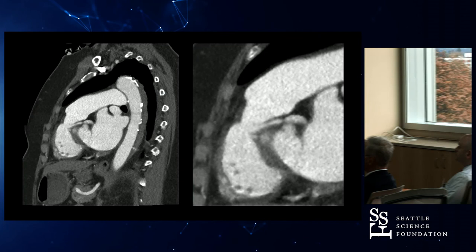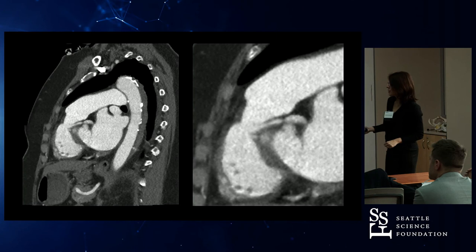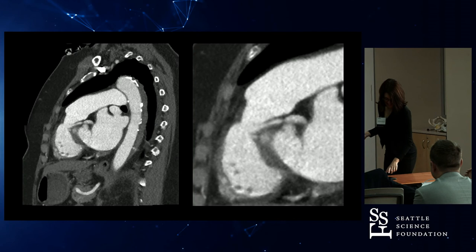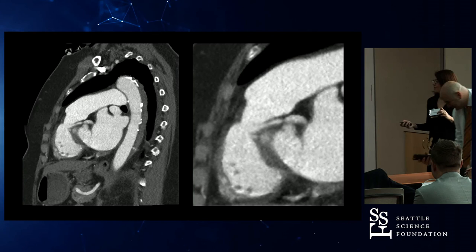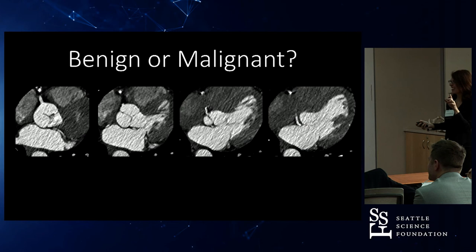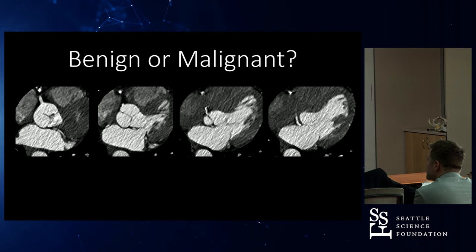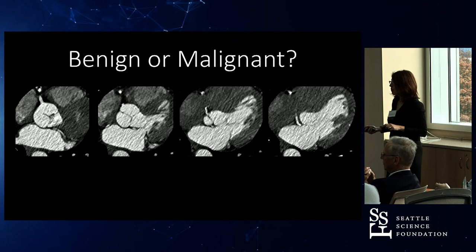Here we have it on the sagittal. That's motion artifact. Here's the left going. Is this benign or malignant? Here's the normal right. Here's the left circumflex coming off — it's going to go like this. It's coming posterior, it's not interarterial, it's coming back.